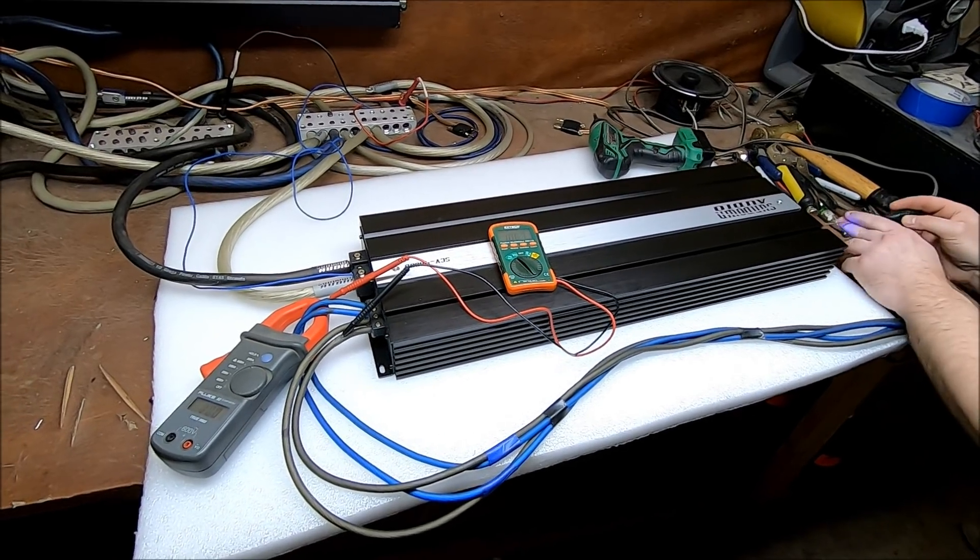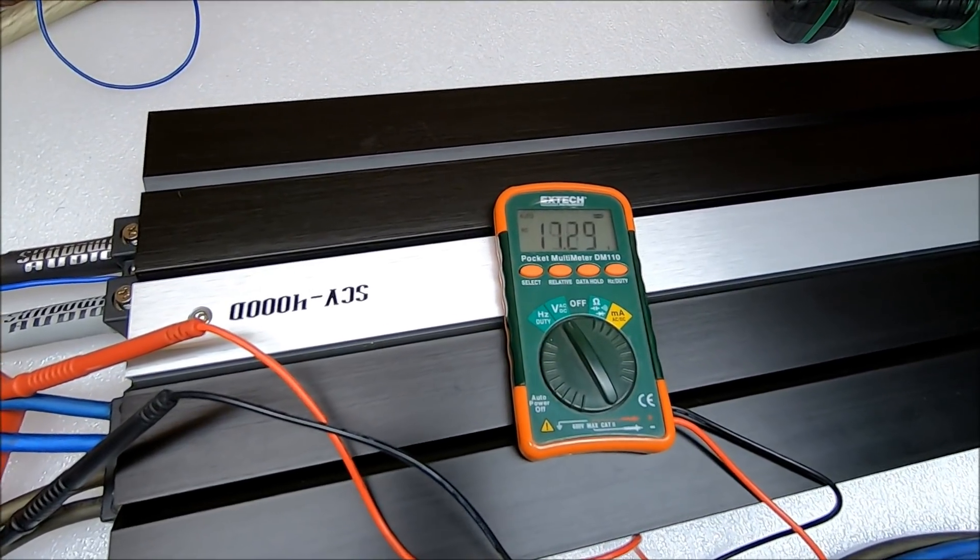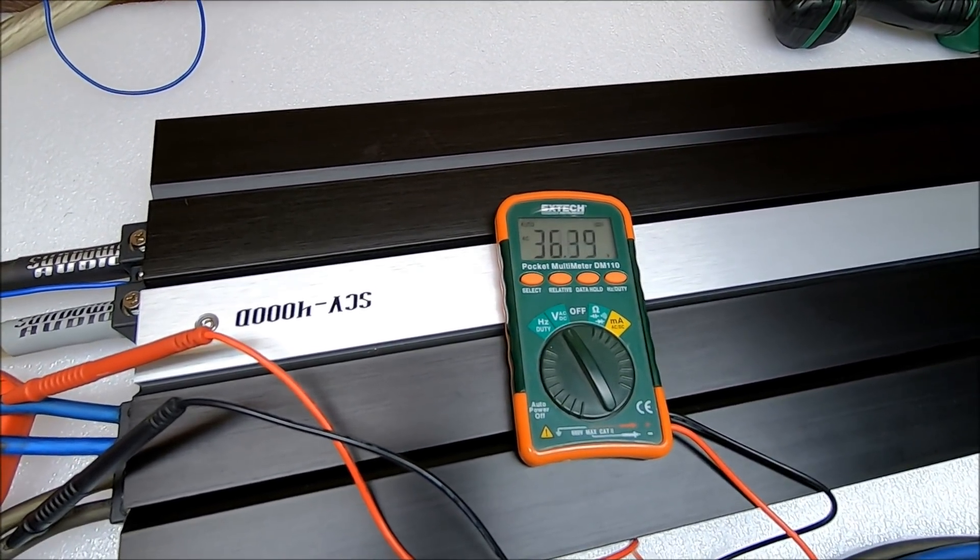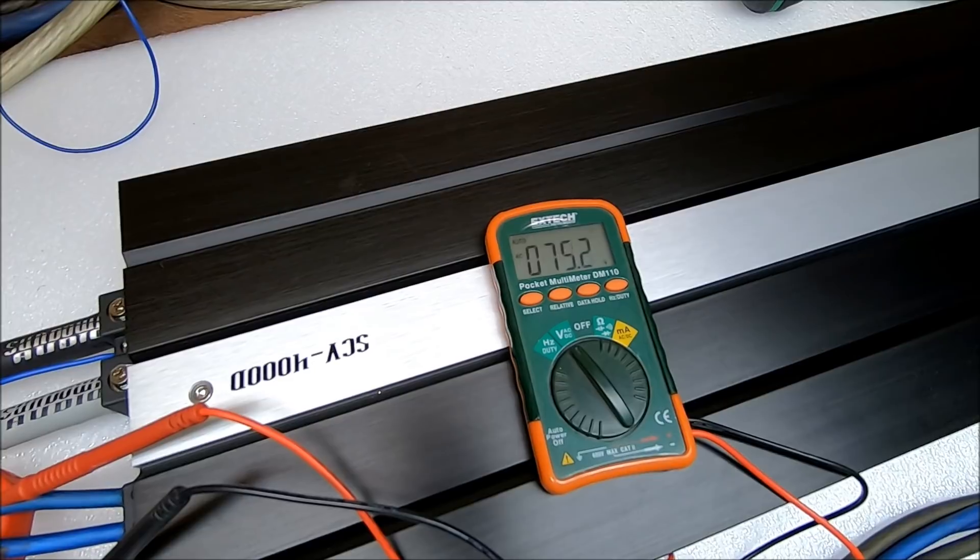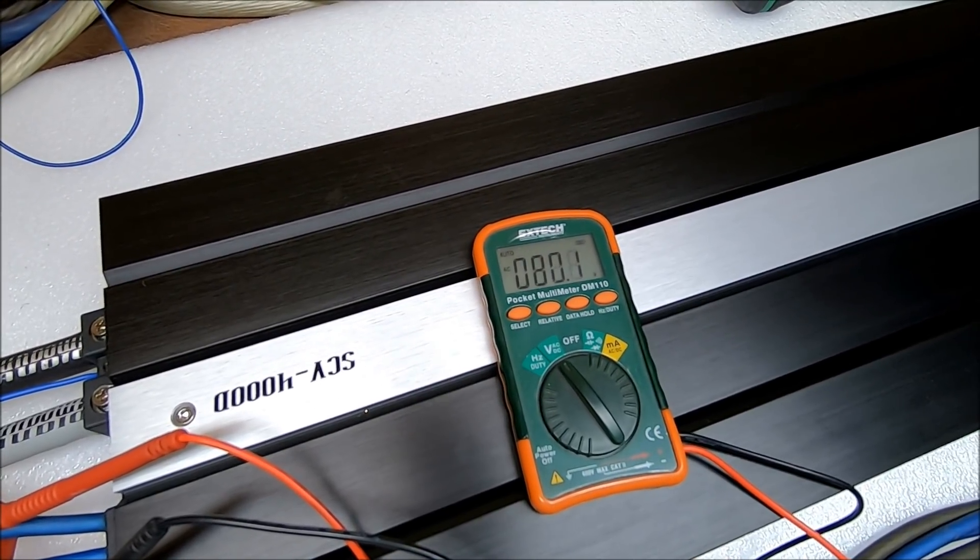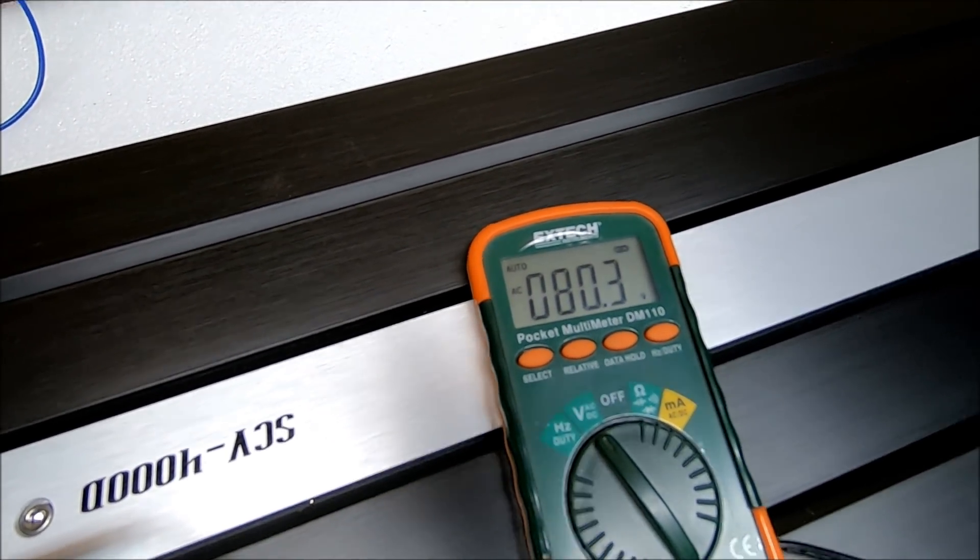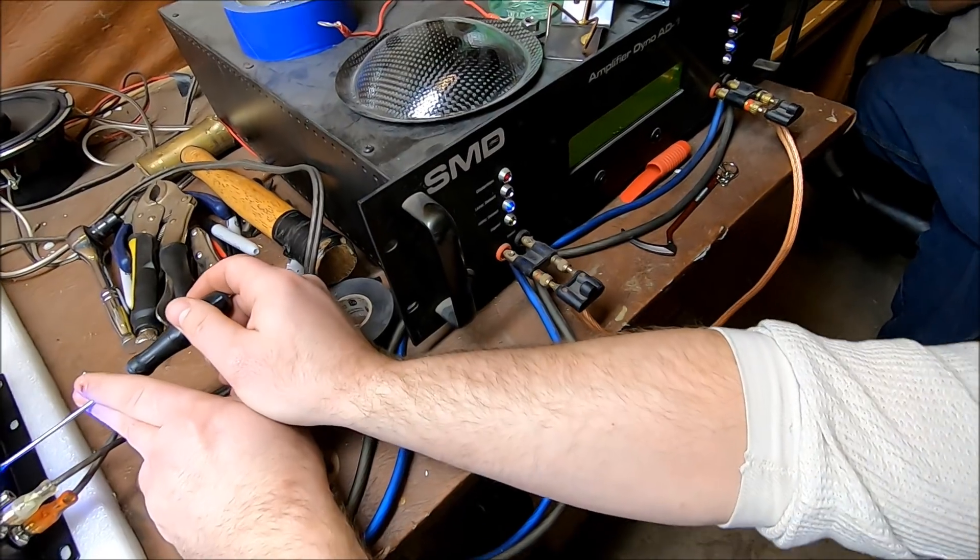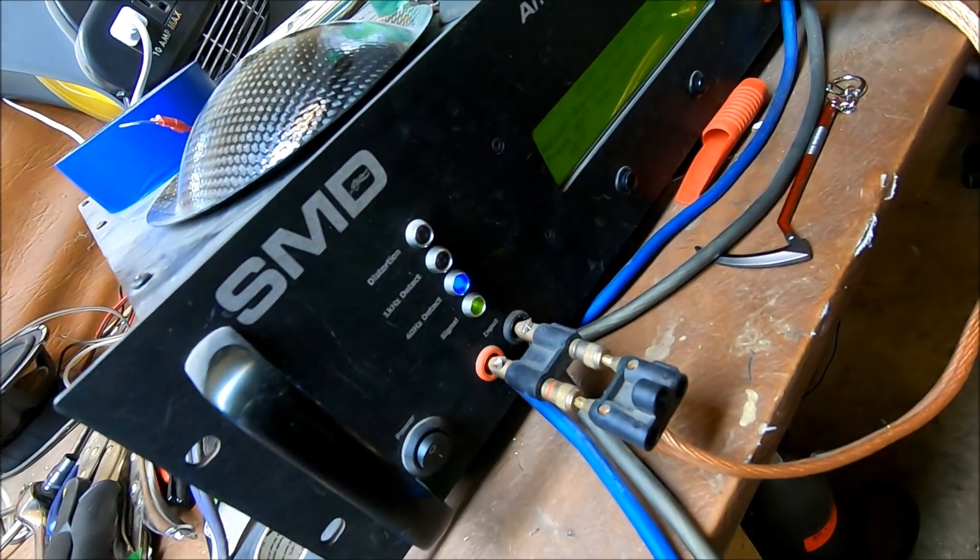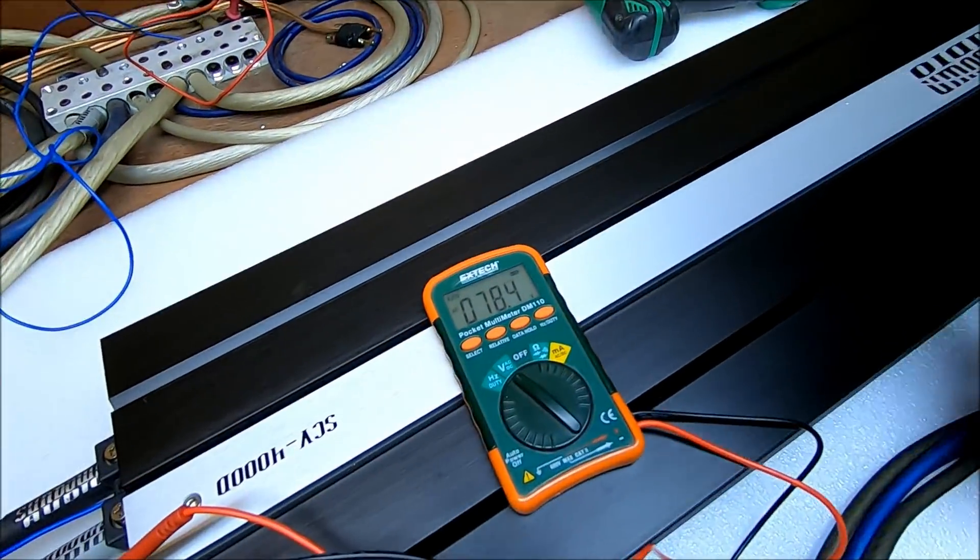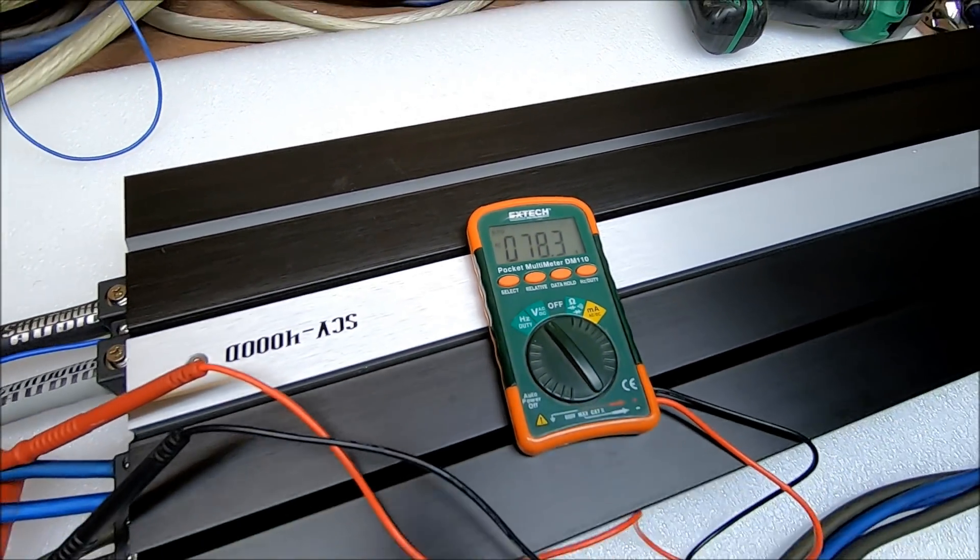Alright, so I'm gonna run this gain up little by little. Watch the distortion light over here on the DD1. So about right there I'm right on the edge of it turning on. Bring the camera over here if y'all can see it, the light's barely starting to turn on. So there we go, bump it back a hair. Our distortion light is completely out and we are at a clean 78.3 volts, 78.4 volts.